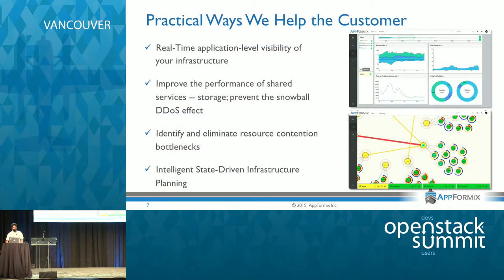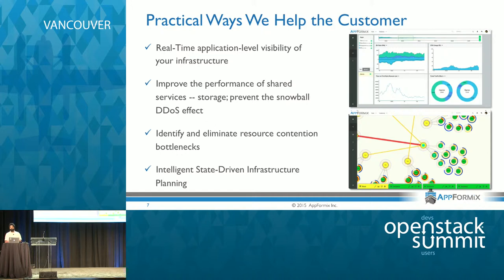The system is currently deployed with several customers, and these are the four key scenarios where we have serious impact. The first is we provide you real-time application-level visibility of your infrastructure. In the next case, in this new environment where we are always sharing services in our cloud infrastructure — for example, you have a shared storage service and you're spinning up virtual machines and containers that are all accessing this common shared storage service — as we scale out the applications, they contend for resources on the storage service and it starts to not perform. It's almost like a snowball DDoS effect on your infrastructure from your own applications. We can come in and prevent that situation.